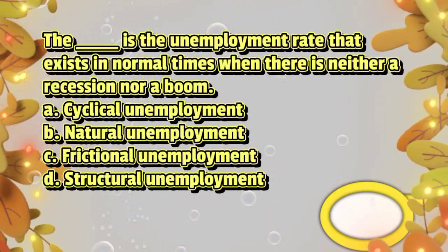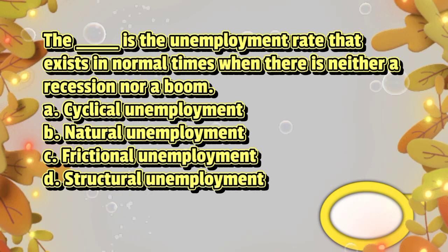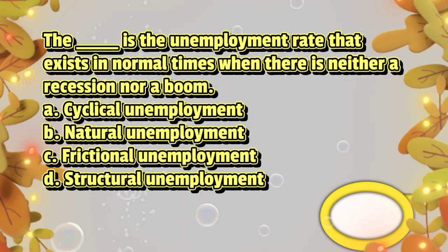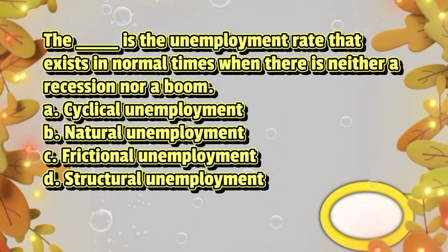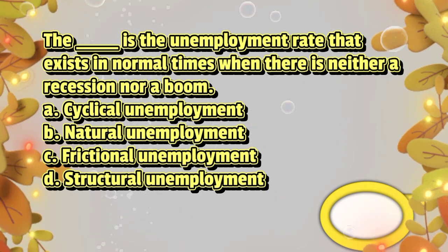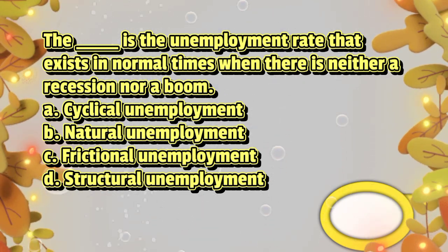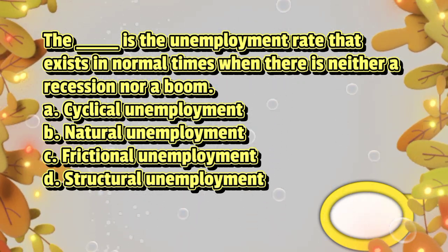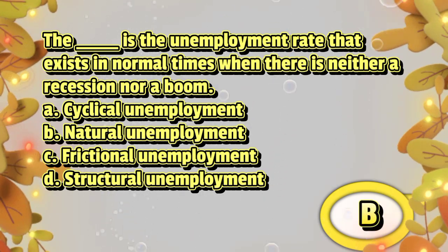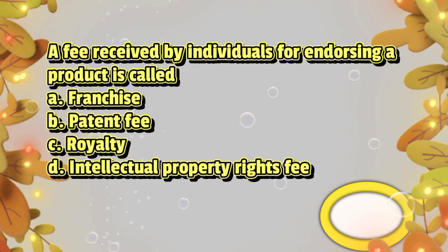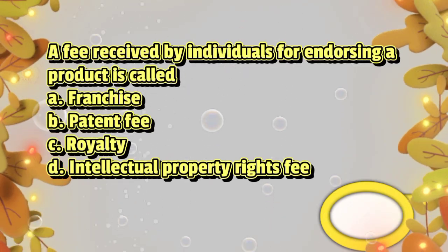The blank is the unemployment rate that exists in normal times when there is neither a recession nor a boom: A. cyclical unemployment, B. natural unemployment, C. frictional unemployment, D. structural unemployment. The answer is letter B.